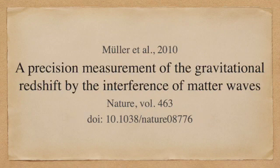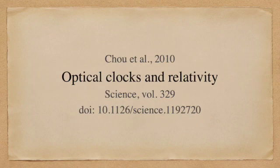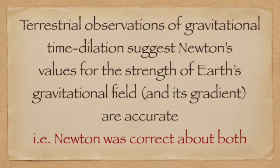The fact that space-time curves, as Einstein predicted, is thus confirmed observationally. The thing to note about these results, however, is that they confirmed the value for the strength of Earth's gravitational field and its gradient that were obtained by Newton. So in the one fell swoop, these experiments confirm both Einstein's geometric argument and the validity and accuracy of the Newtonian approximation.